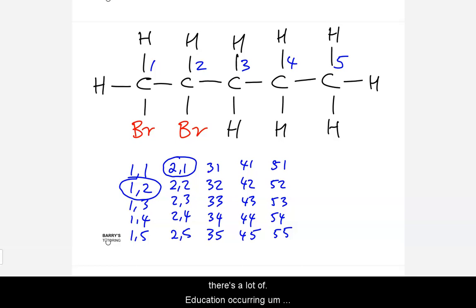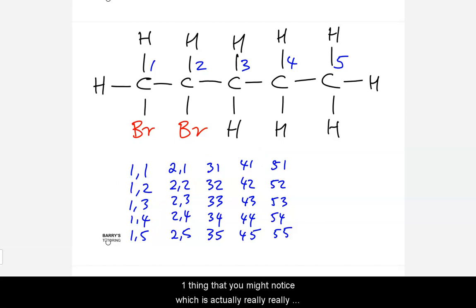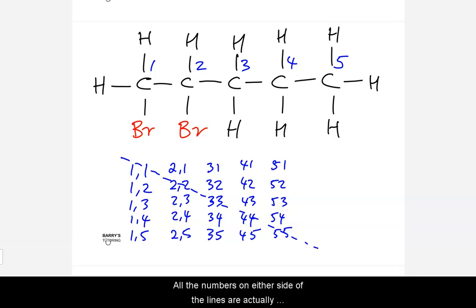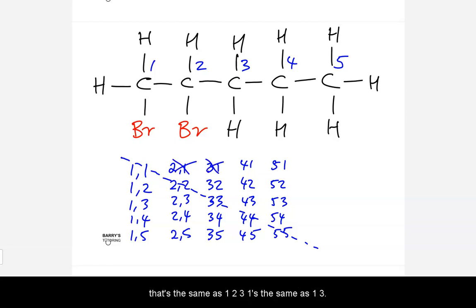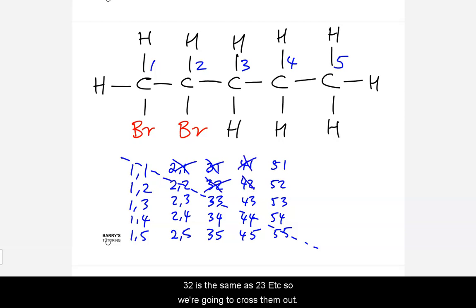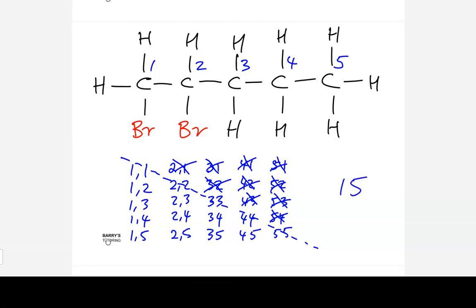1,2 and 2,1 are identical, and there's a lot of duplication across the board. For example, 1,3 is the same as 3,1, and 1,4 is the same as 4,1. If you draw a diagonal line through the grid, all the numbers on either side of that line are duplicates of each other. So we can cross them out — 2,1 is the same as 1,2; 3,1 is the same as 1,3; 3,2 is the same as 2,3, and so on. After crossing those out, counting what remains gives us 15.